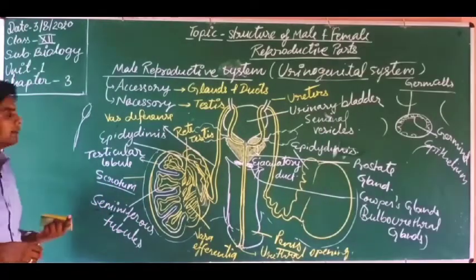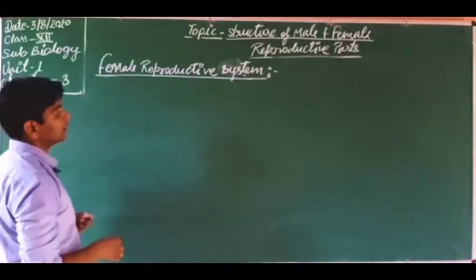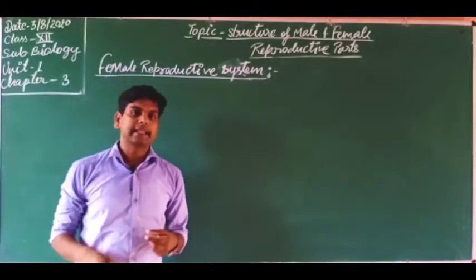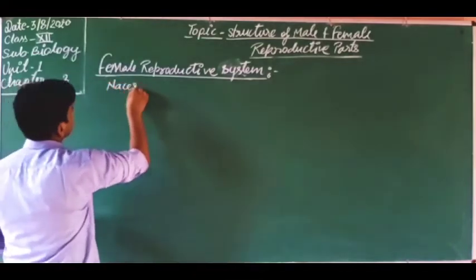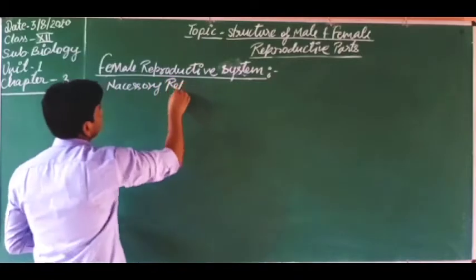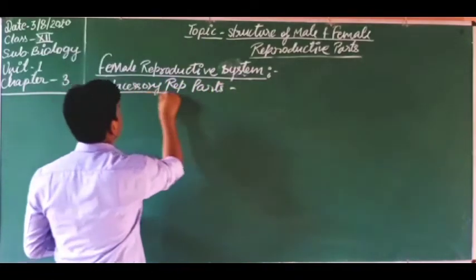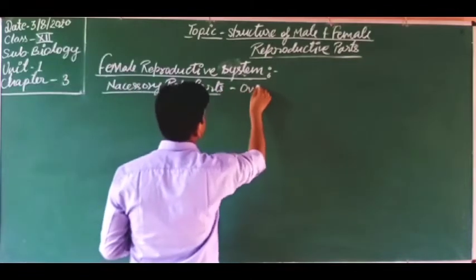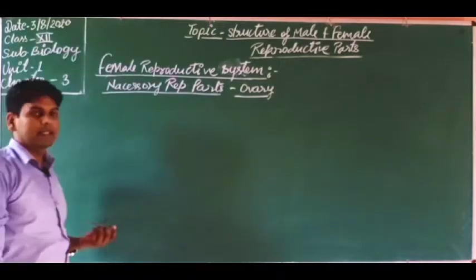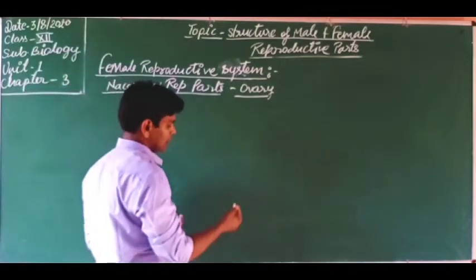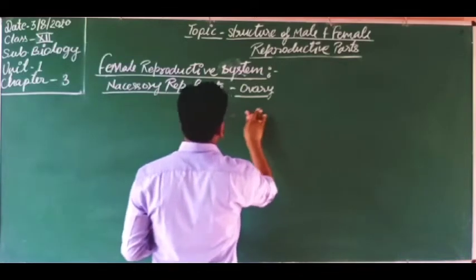Now let's discuss the female reproductive system. The ovaries are the main or necessary reproductive part of the female. One pair of ovaries is found in the human female. Let's draw the structure of the female reproductive system.